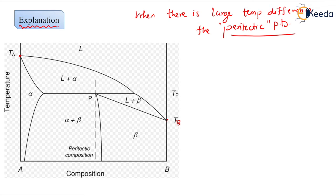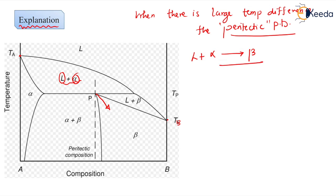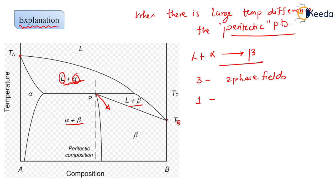In this phase diagram we have liquid plus alpha regions. Liquid reacts with alpha during cooling to form beta. This is the peritectic reaction. Looking at the phase fields: we have three two-phase fields — liquid plus alpha, liquid plus beta, and alpha plus beta. We also have three single-phase fields: liquid, alpha, and beta.